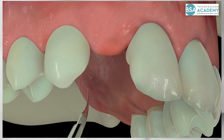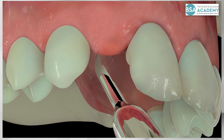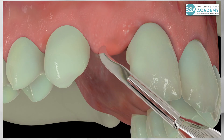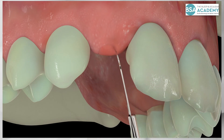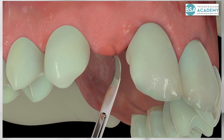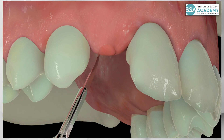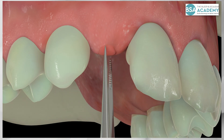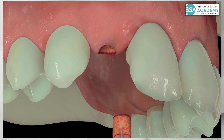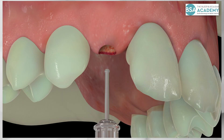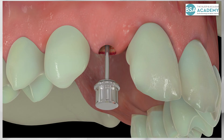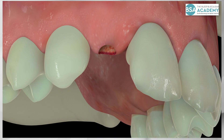Eight weeks later, a re-opening procedure is done with a punch incision using a 12B blade. The healing cap is removed with a screwdriver and replaced by a longer one.